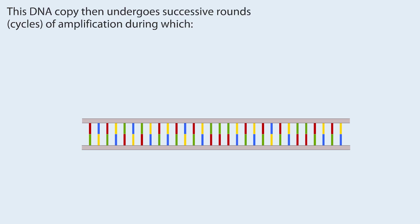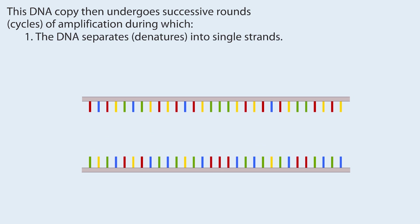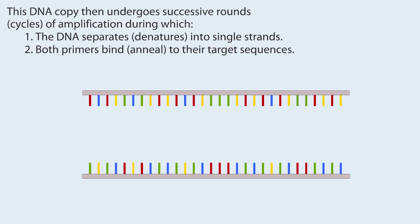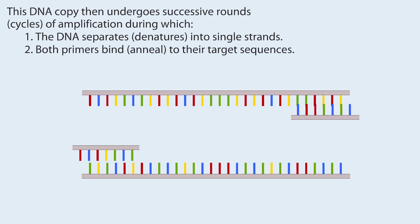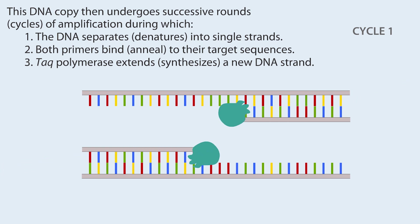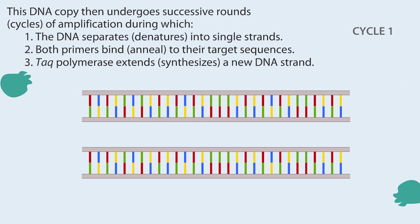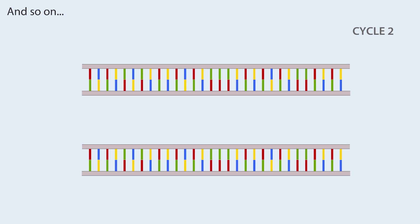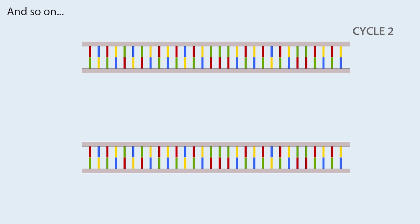This DNA copy then undergoes successive rounds, or cycles, of amplification during which the DNA separates, or denatures, into single strands. Both primers bind and anneal to their target sequences, Taq polymerase extends and synthesizes a new DNA strand, and so on.